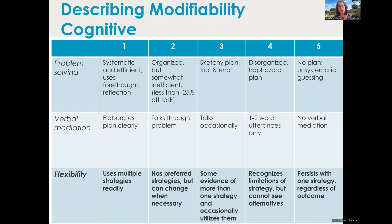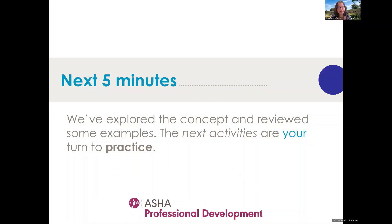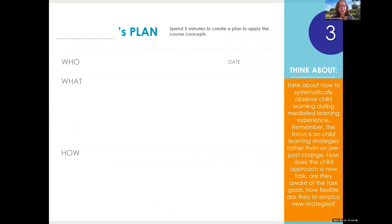We score all of these using the scale. Now we've explored the concept of child modifiability and reviewed some examples, and in the next activities it's your turn to practice. Here's your plan: think about how to systematically observe child learning during a mediated learning experience. I've given you a couple of ways to do that — looking at examiner effort and child responsivity, then more systematically drilling into the social-emotional and cognitive aspects of learning — and you can use those to systematically observe how efficiently the child is learning.